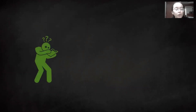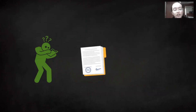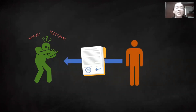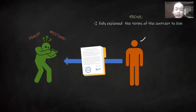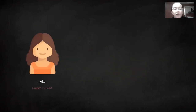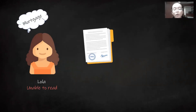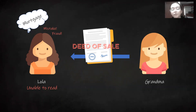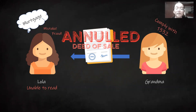Let's imagine this situation. When one of the parties who is unable to read or understand the contract alleges that the document is a fraud or mistake, the other party who is enforcing the contract has the burden to prove that he has actually fully explained the terms of the contract to that party and that there is no fraud or mistake. For example, when Lola, who is unable to read, finds a contract of mortgage when actually it is a deed of sale and later alleges that it is a fraud or mistake, the one who enforced the contract must comply with the provision of Article 1332. If unable to do so, then the deed of sale will be annulled.